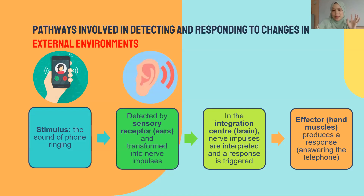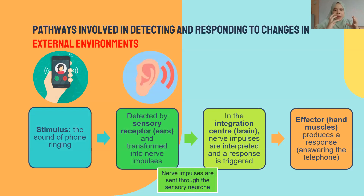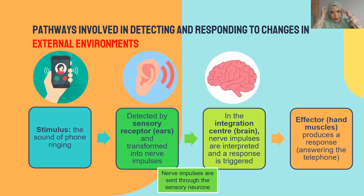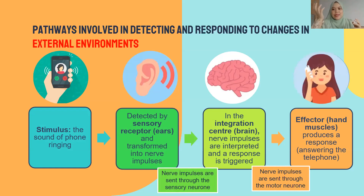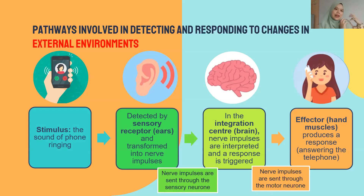In the ears, there are receptors, and these receptors will detect the sound and then transform the sound into a nerve impulse. The nerve impulse is sent through the sensory neuron and goes to our brain. The brain will integrate the message and then tell the response. The nerve impulse is sent through the motor neuron to the effector — which is your hand muscle — and you respond by picking up the phone and answering the call. This is an example of an external environment stimulus.